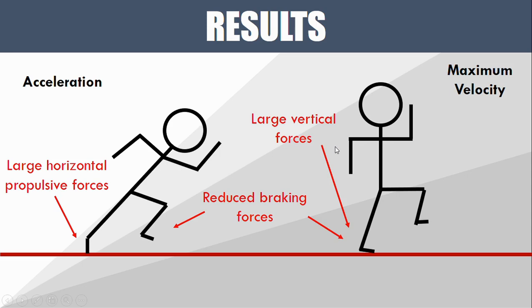The other thing was that there were larger vertical forces during the maximum velocity phase. With each ground contact during maximum velocity running, the vertical forces were larger in magnitude, which again makes sense—they're striking the ground harder, which is then going to propel them forward faster.